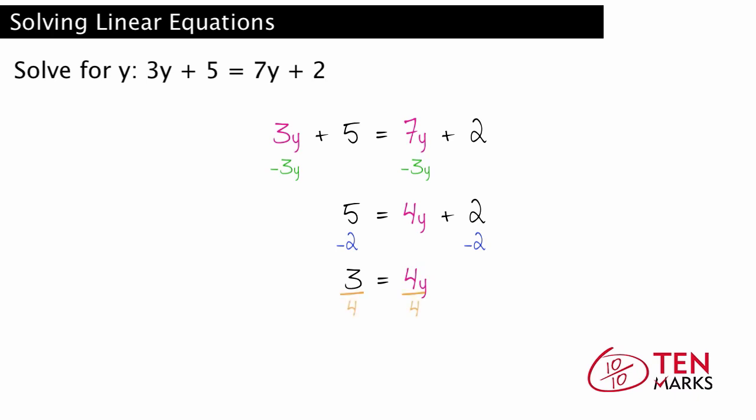Now divide by 4 on both sides to undo the multiplication of y by 4. You get y equals 3 over 4, your final solution to the problem. And you've done it. You've just solved a linear equation with multiple steps.